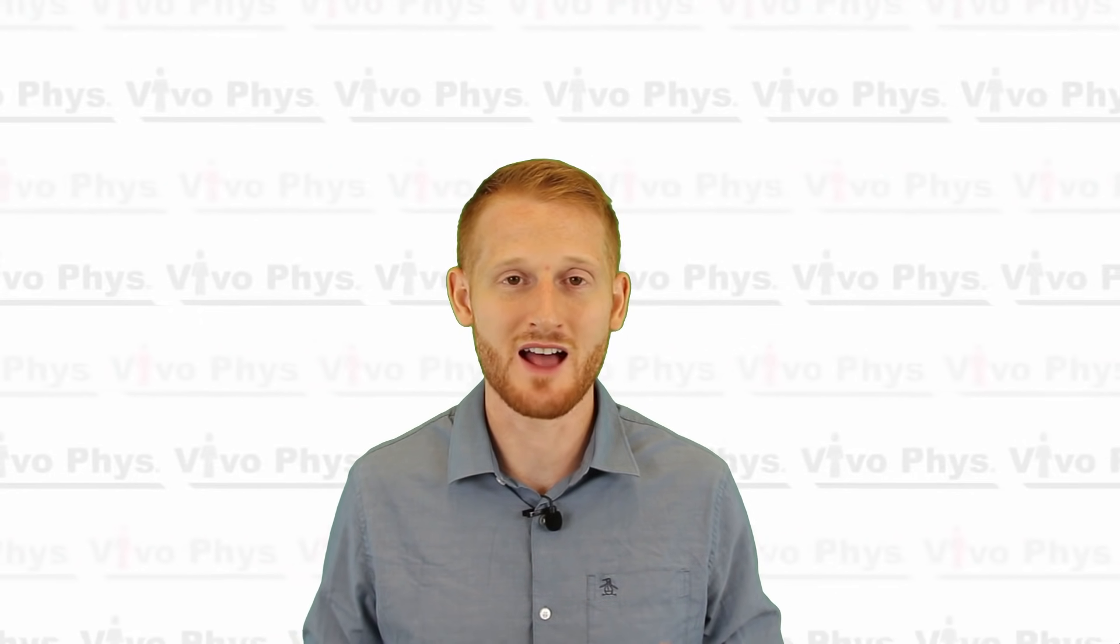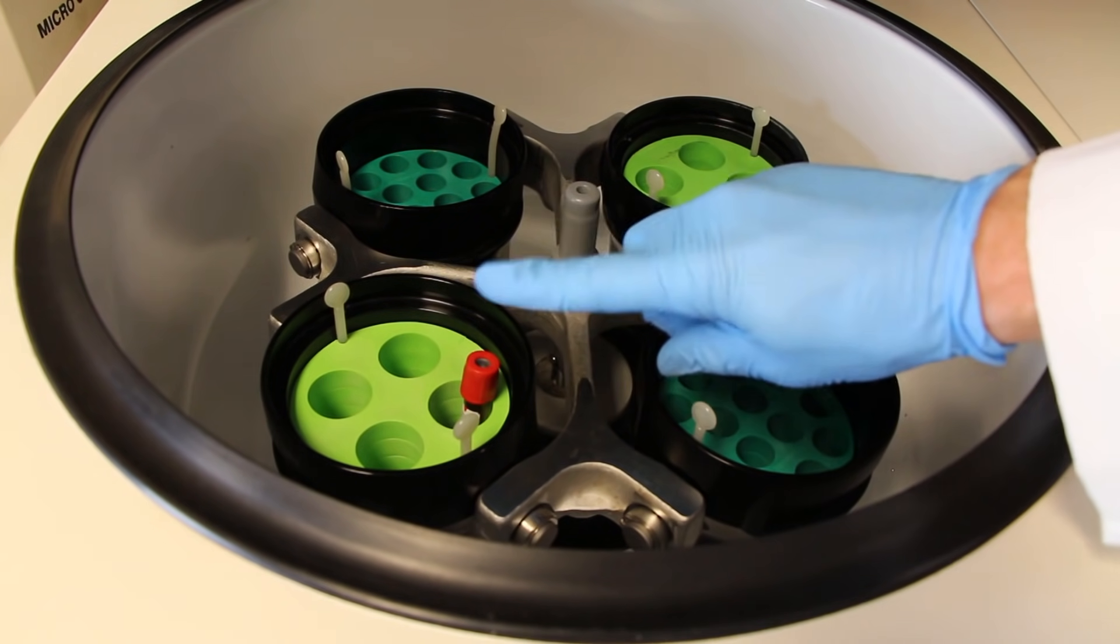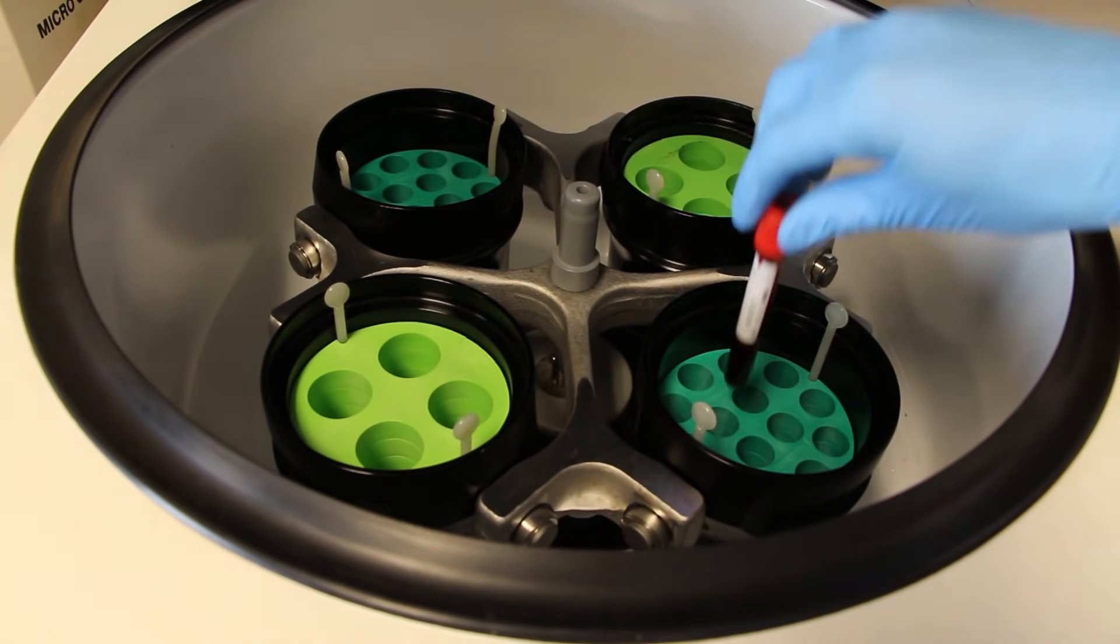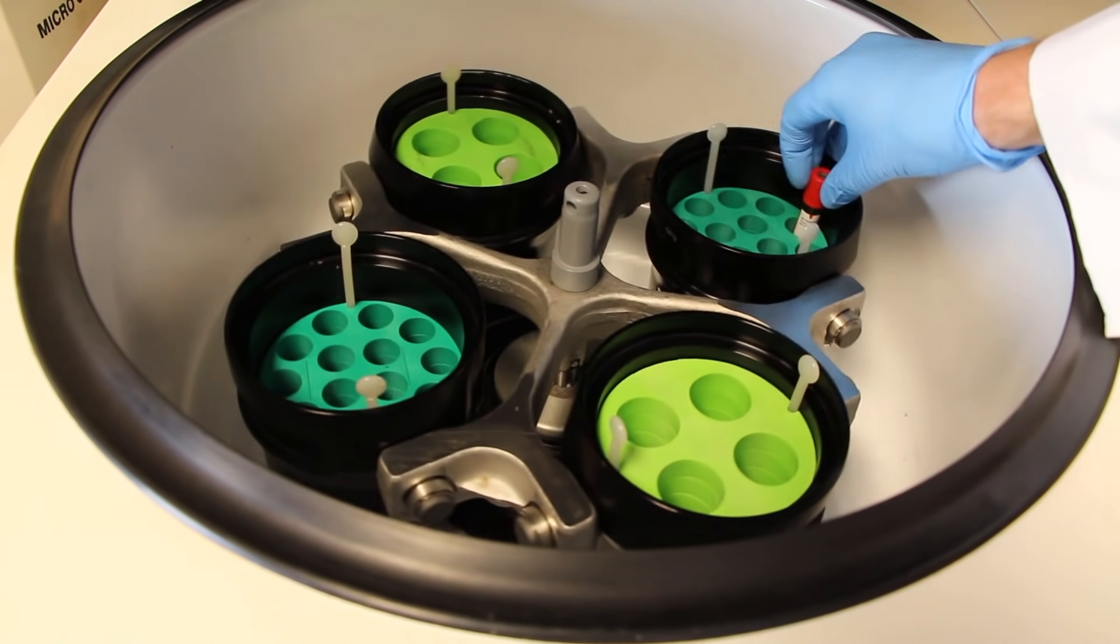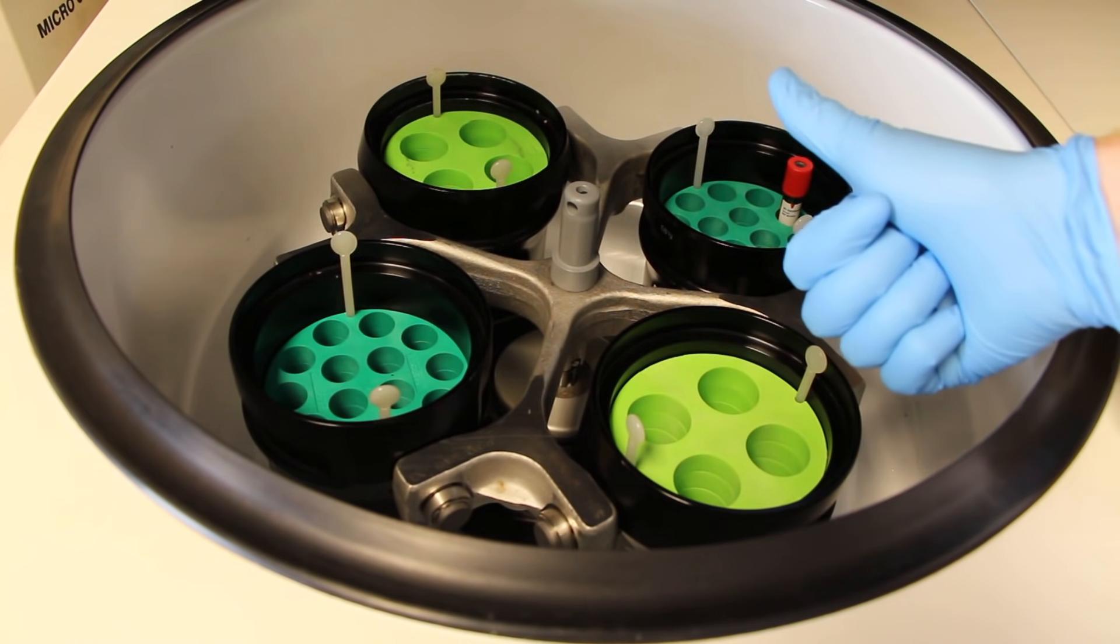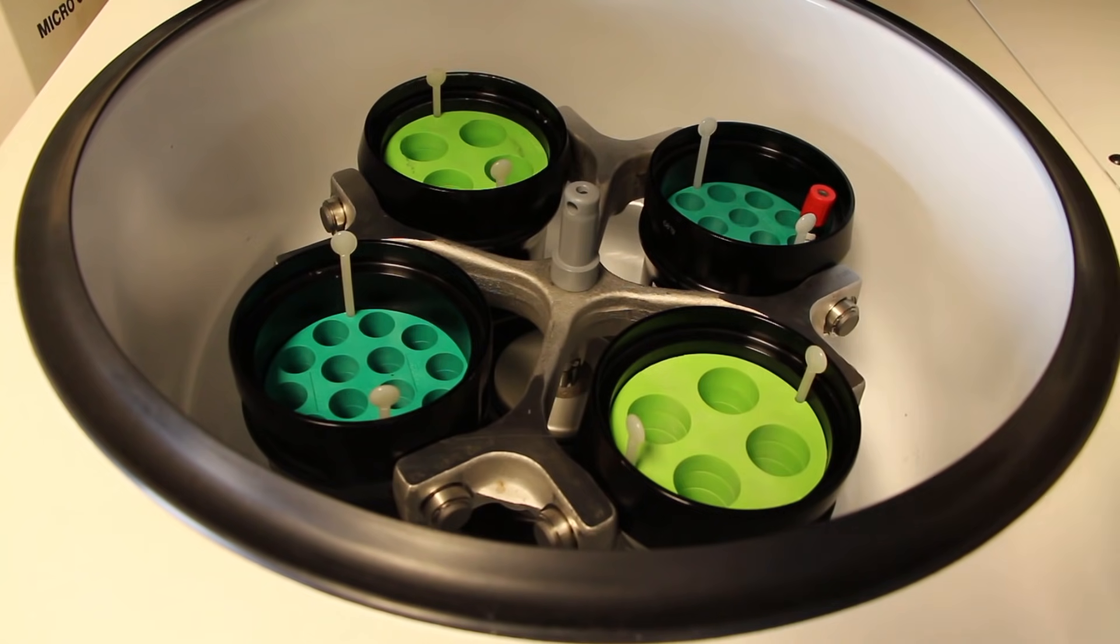Set those parameters to whatever type of analysis you're going to be doing, and then you're going to put the blood tubes inside the centrifuge. Make sure that you're putting it inside the proper tubes within the centrifuge. If you put it in tube holders that are too large for the tubes, it's not going to hold it very well and you don't want that. So put it in the right size tube holders for the tubes you're using.